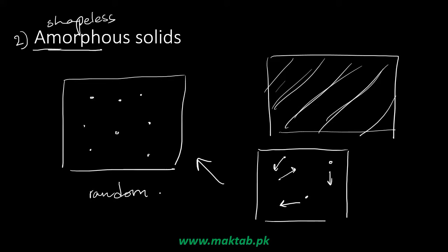There is no arrangement of atoms in amorphous solids. For example, glass is a solid with no arrangement of atoms. Besides glass, plastics and other man-made materials with no specific structure are called amorphous solids.